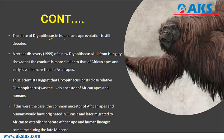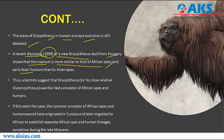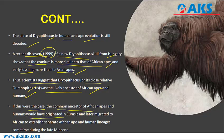The place of Dryopithecus in human and ape evolution is still debated. A 1999 discovery of a new Dryopithecus skull from Hungary shows the cranium is more similar to African apes and early fossil humans than to Asian apes. Scientists suggest that Dryopithecus, or its close relative Ouranopithecus, was the likely ancestor of African apes and humans, originating in Eurasia before migrating to Africa during the late Miocene.